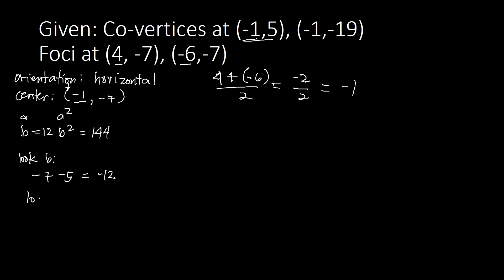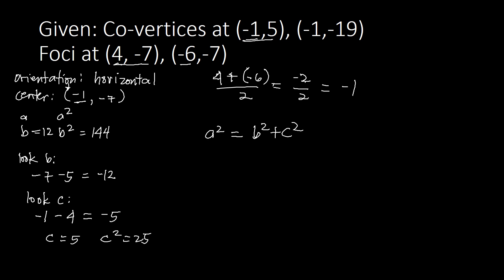We find C from center to focus. Center X is −1, focus X is 4. Subtracting: −1 minus 4 equals −5. Dropping the negative, C equals 5, so C squared equals 25. Since this is horizontal, A squared equals B squared plus C squared: 144 plus 25 equals 169.